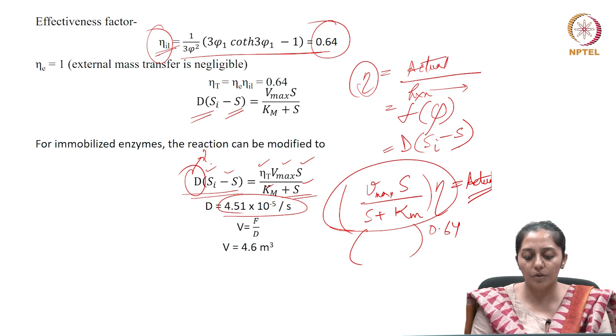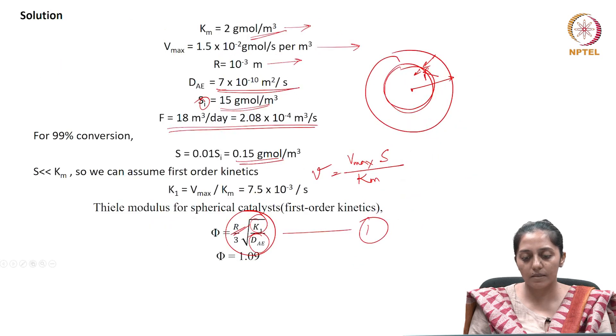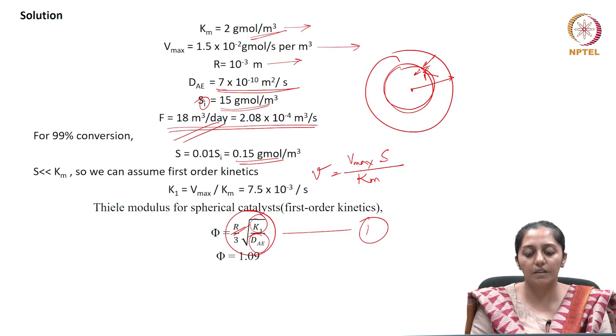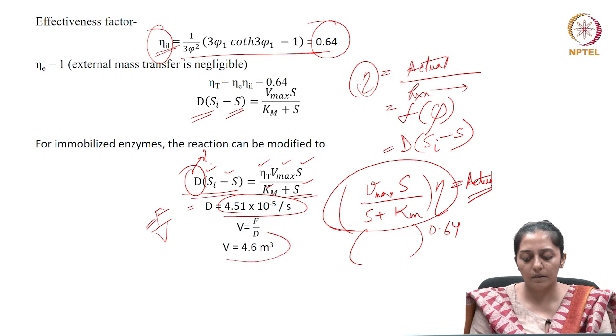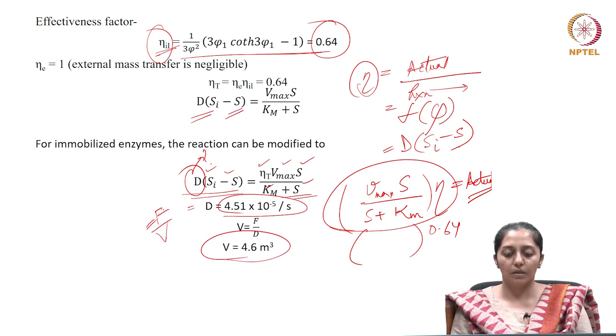The dilution rate is F/V. With the volumetric flow rate of 18 m³/day, we calculate the reactor volume as 4.6 m³.